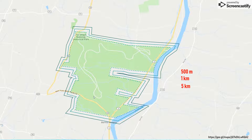This buffer analysis allowed researchers to account for land cover change along the edges of the park, and that's important because impacts to those edges can potentially affect wildlife and vegetation within the park.